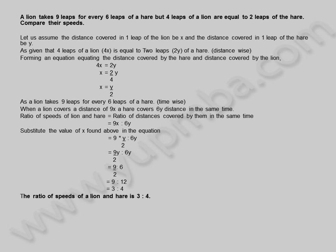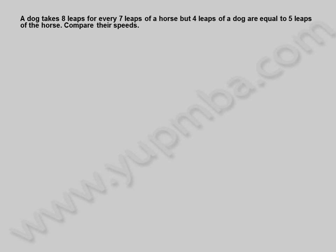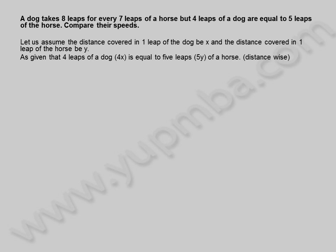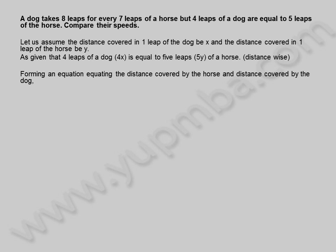Let us see another example. A dog takes 8 leaps for every 7 leaps of a horse, but 4 leaps of a dog are equal to 5 leaps of the horse. Compare their speeds. Let us assume the distance covered in 1 leap of the dog be x and the distance covered in 1 leap of the horse be y. As given that 4 leaps of a dog, 4x, is equal to 5 leaps, 5y, of a horse — distance wise. Forming an equation equating the distances covered by the horse and the dog.